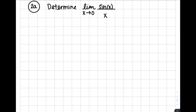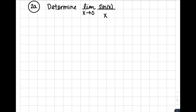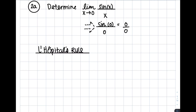For problem set 2, we're going to be diving into limits and derivatives. When you have a limit, your first instinct will probably be to plug in the value the limit is approaching — in this case, x approaching 0 — into sin of x over x. When we try that out, though, we get 0 over 0, and that's not what we want. When we end up with something like this, we'll want to use L'Hôpital's rule. Two of the most common situations requiring L'Hôpital's rule are when the limit gives us 0 over 0, or infinity over infinity.